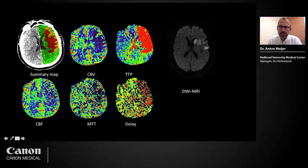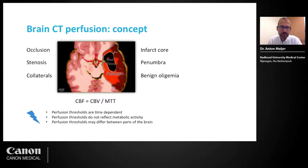Brain CT perfusion is used to identify a brain perfusion deficit and estimate tissue viability. This is highly dependent on the collateral status of the patient. It is also important to realize that perfusion thresholds are time-dependent, that they do not reflect metabolic activity of the brain, and that brain perfusion thresholds may differ between parts of the brain — for example, between white and gray matter.